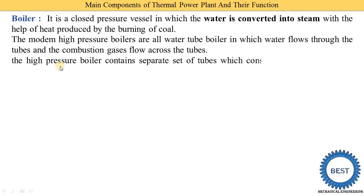High-pressure boilers contain a separate set of tubes which constitute heat exchangers. In a high-pressure boiler, four types of heat exchangers are provided: the economizer, air preheater, superheater, and reheater.